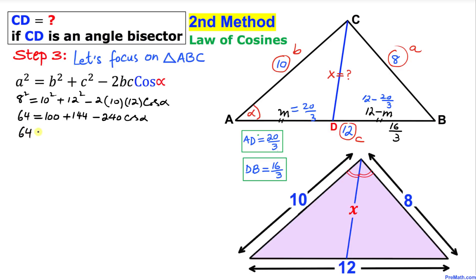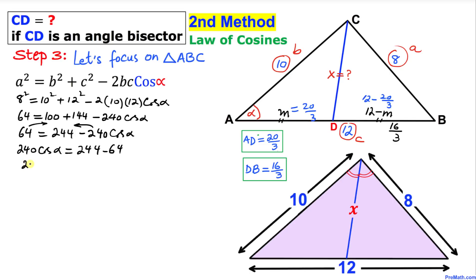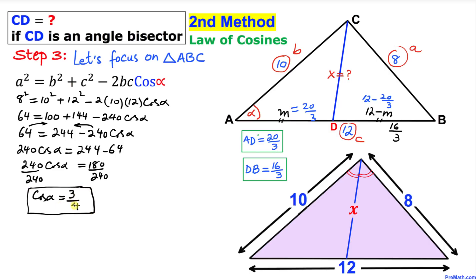Simplifying further: 64 equals 244 minus 240 cosine of alpha. Moving cosine of alpha to the left and 64 to the right: 240 cosine of alpha equals 244 minus 64, so 240 cosine of alpha equals 180. Dividing both sides by 240 and reducing, cosine of alpha equals 3 over 4.